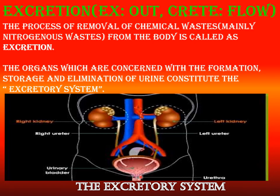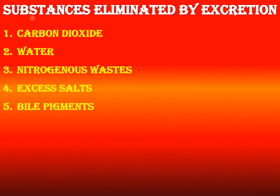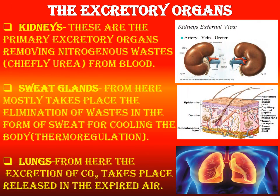The process of removal of chemical waste, mainly nitrogenous waste, from the body is called excretion. The substances eliminated include carbon dioxide, water, nitrogenous waste, excess salts, and bile pigments. The kidneys are the primary organs of excretion — they remove urea from the blood in the form of urine.